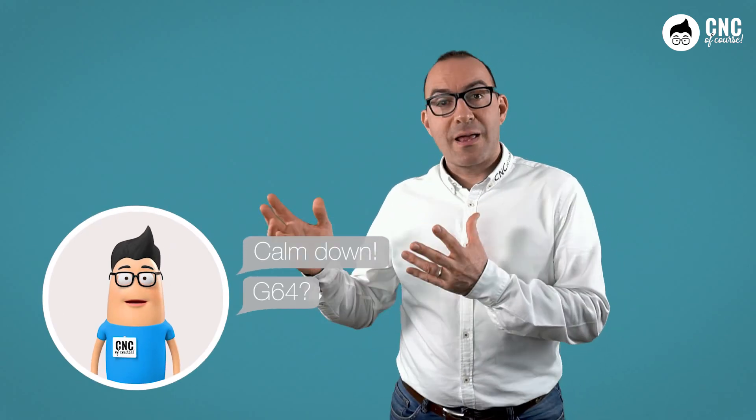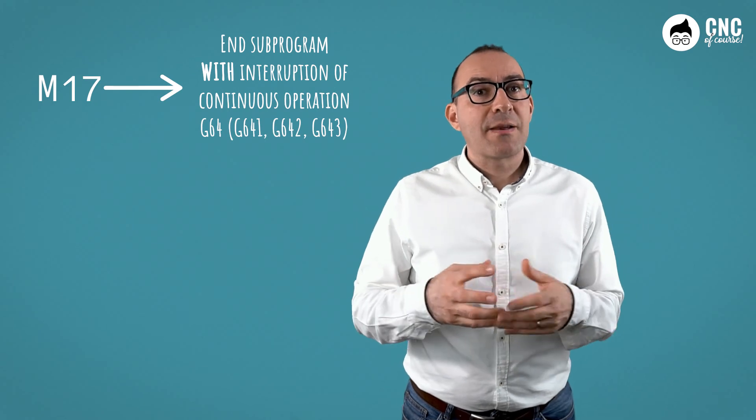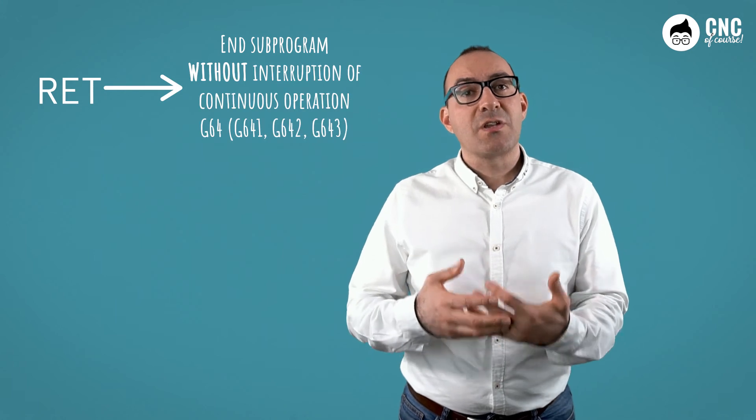The M17 or RET functions are similar but not identical, and the difference is exactly a different behavior compared to the G64 functions. What is it, Paolo? You are right, Paolo. We will have a chance to explain what the G64 function is. For now, we can say that G64 is the continuous operation mode, while G60 is its opposite and is the precise stop. The M17 function resets G64 if it was active by resetting G60, while RET keeps the G64 function always active.